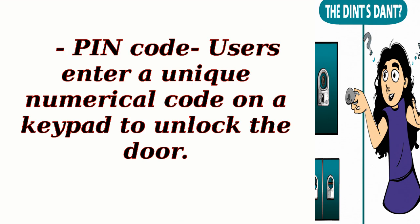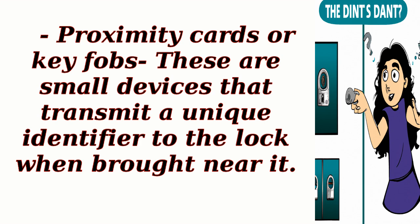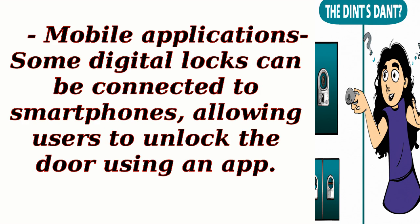PIN code: users enter a unique numerical code on a keypad to unlock the door. Biometric data: these locks can scan fingerprints, retinas, or even facial features to grant access. Proximity cards or key fobs: these are small devices that transmit a unique identifier to the lock when brought near it. Mobile applications: some digital locks can be connected to smartphones, allowing users to unlock the door using an app.